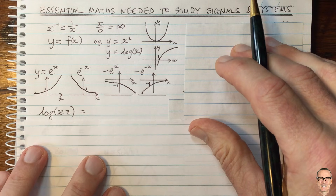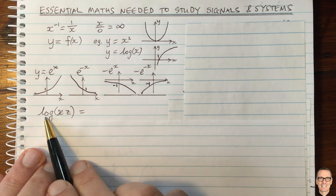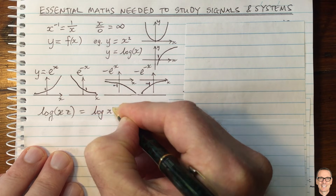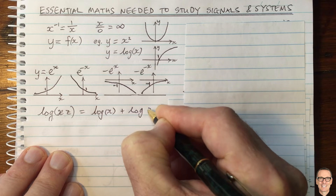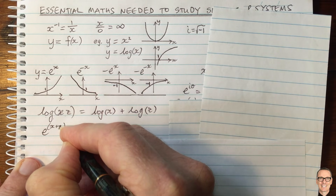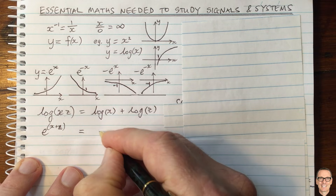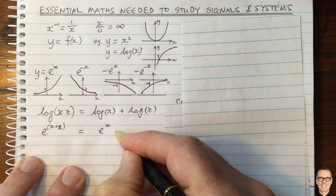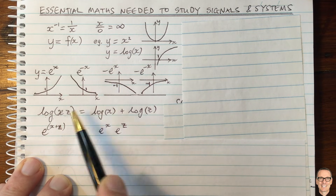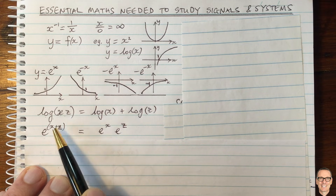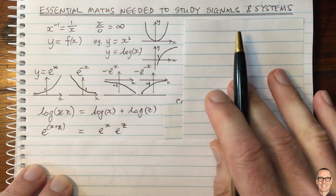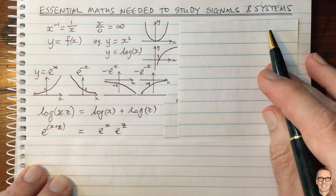We need to know some properties of these functions. For example, log of x times z is the log of x plus the log of z. Another related one: e to the power of x plus z can be rewritten as e to the power of x times e to the power of z. When you've got the log of a product, you get the sum of the logs. When you have an exponential of a sum, you get the product of the exponentials. You really want to make sure these properties come second nature to you.